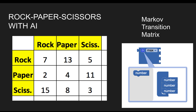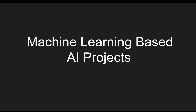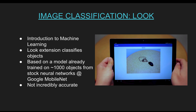For the machine learning-based AI projects, the first example is image classification using the Look extension. This is our introduction to machine learning. The Look extension, incorporated into the App Inventor app, classifies objects — you hold the mobile device up to an object and it recognizes it as a pencil, a keyboard, etc. This extension is based on a model already trained on about 1,000 objects from Google's MobileNet. It's not terribly accurate, but it gives us a chance to introduce concepts like the possibility of bias in AI.